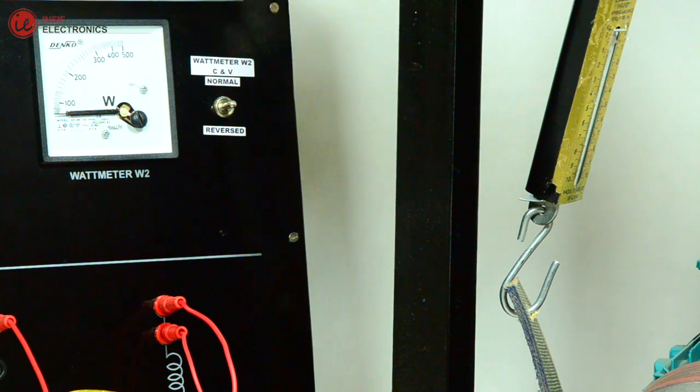Wattmeter W2 has an option to interchange the coil connections by toggling the switch to normal or reverse.